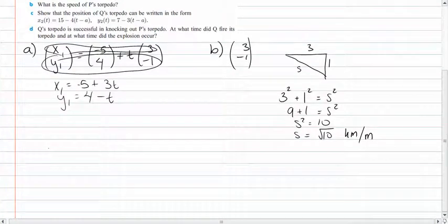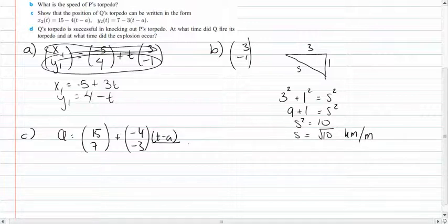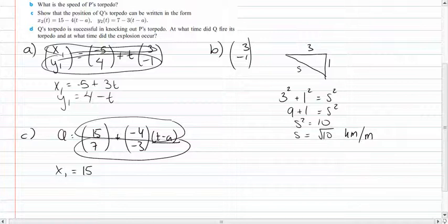Question C is asking for the position of Q's torpedo in the same form as for A. We are given that the vector equation is 15, 7 plus negative 4, negative 3, and T minus 8. Now it's T minus 8 because we are told that the torpedo is fired 8 minutes later. So it can't be the same as the vector. We have to subtract 8 to get the time. So we can split it up again into the parametric equations. X1 is equal to 15 minus 4 times T minus 8, and Y1 is equal to 7 minus 3 times T minus 8.